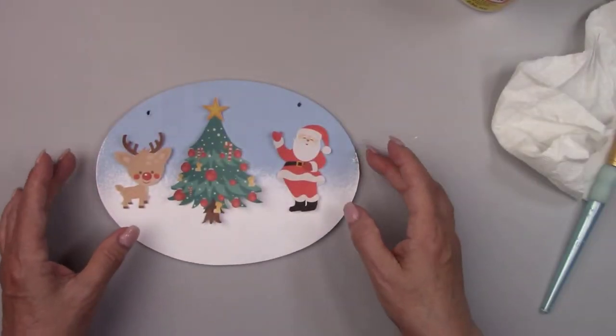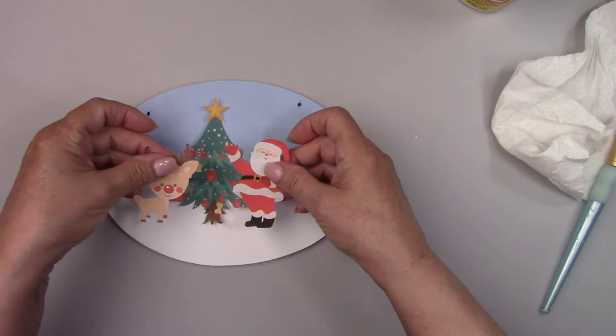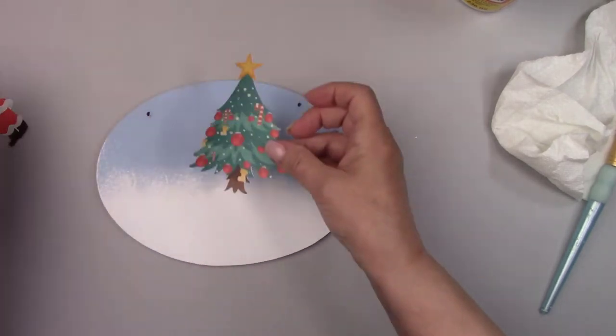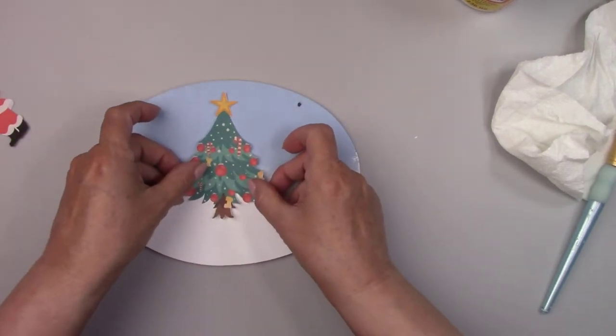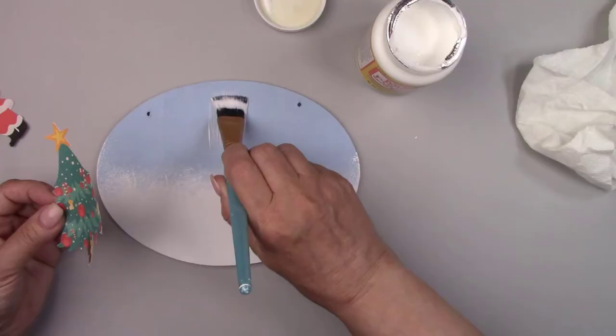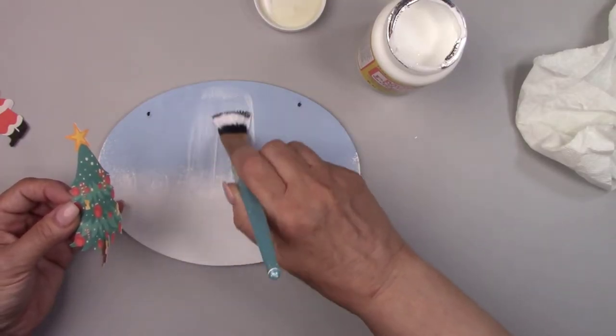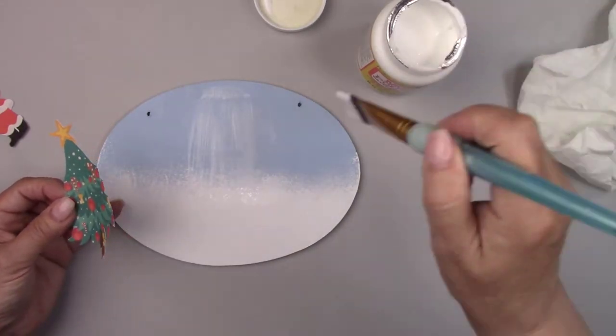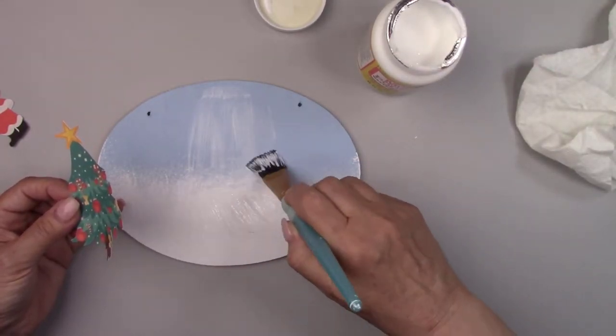I printed and cut these cute pictures with my Cricut machine. They're printed on plain copy paper using an inkjet printer. If you don't have a Cricut machine, you can print and cut any picture on your home printer for your project.